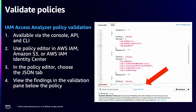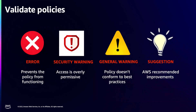Let's start with setting the right permissions. If there's a developer authoring policies, they can use Access Analyzer policy validation to ensure that the policy being authored is secure and functional. When you're authoring a policy through the AWS console, a small window pane opens up below the policy — it could be in the IAM console, S3 console, or IAM Identity Center. Access Analyzer quickly runs hundreds of checks based on security best practices, identifies possible issues with your policy, and shows that in the window pane below.